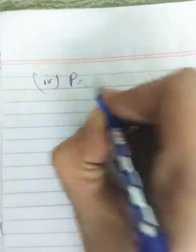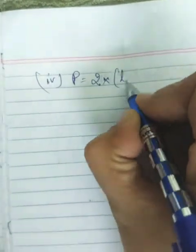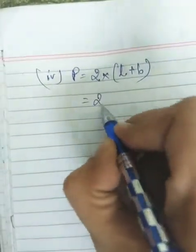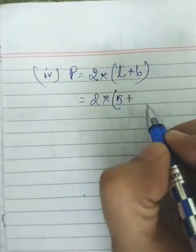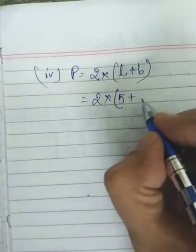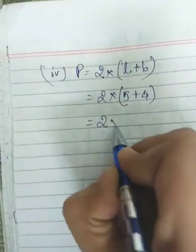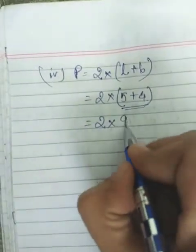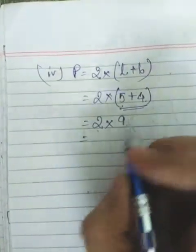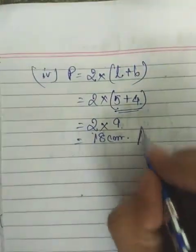Next question: perimeter of a rectangle — we know the formula and we have to write it every time. It is 2 into (length plus breadth). The question gives length as 5 cm and breadth as 4 cm. Simply, 5 plus 4 is 9, and 2 into 9 is 18 centimeters — that is the answer.